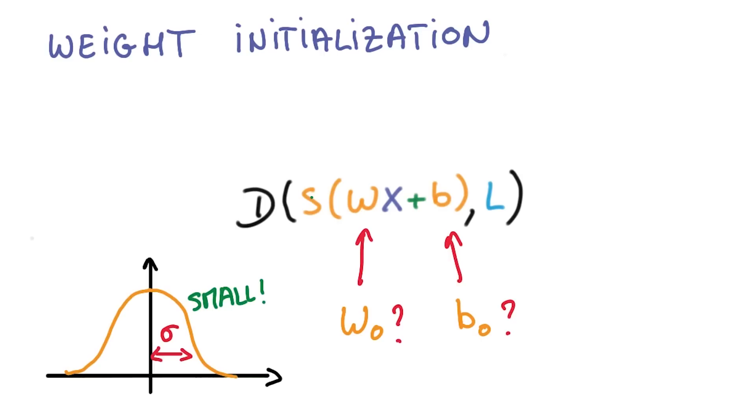Because of the softmax on top of it, the order of magnitude also determines the peakiness of your initial probability distribution. A large sigma will mean that your distribution will have large peaks. It's going to be very opinionated. A small sigma means that your distribution is very uncertain about things. It's usually better to begin with an uncertain distribution and let the optimization become more confident as the training progresses. So use those small sigma to begin with.